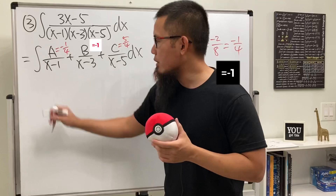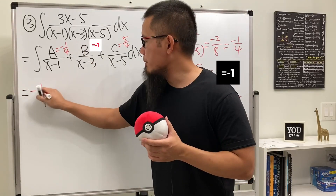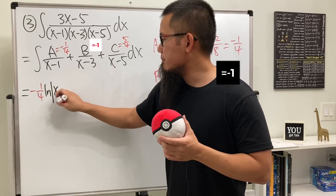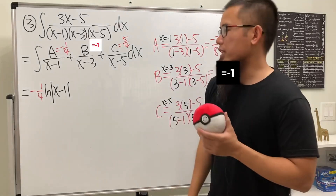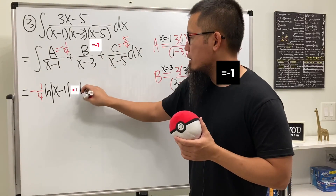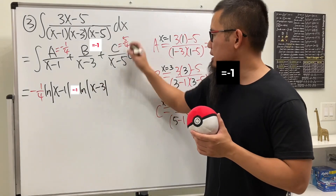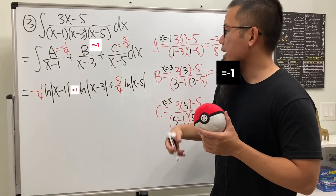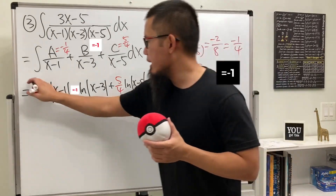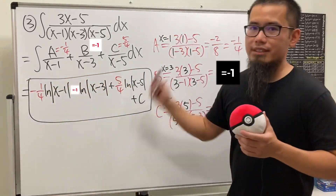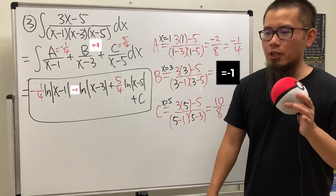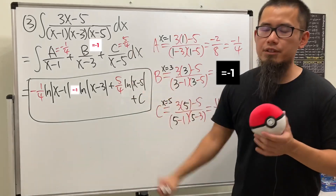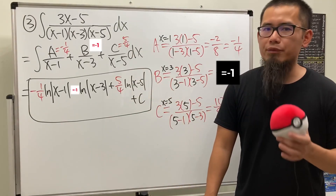Now integrating: negative 1/4 times ln|x minus 1| plus B times ln|x minus 3| plus 5/4 times ln|x minus 5| plus C, since all coefficients on the linear factors are 1. Be sure to watch my next video because I'll show you what to do if we have quadratic factors on the bottom, and also what if we have repeated factors.